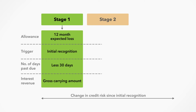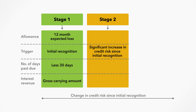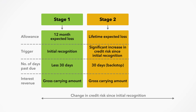Loans are placed in stage 2 when there has been a significant increase in credit risk since initial recognition. A loan is presumed to be in stage 2 if it is more than 30 but less than 90 days in arrears unless there is other evidence of impairment. This days-in-arrears presumption provides a backstop to ensure that loans transition from stage 1 when there is a significant increase in credit risk. The required allowance for ECL is the expected loss over the lifetime of a loan. Interest revenue continues to accrue.